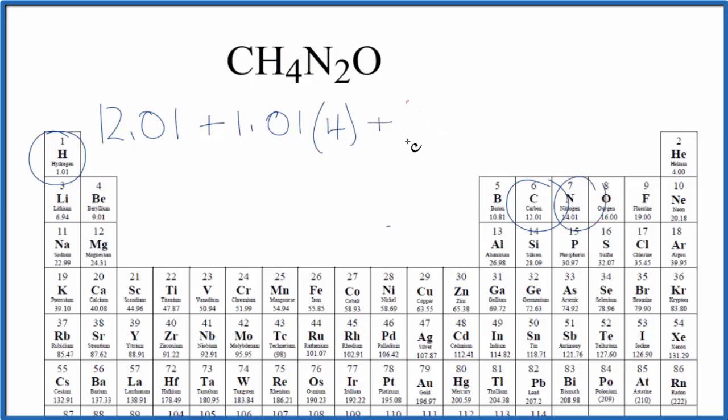14.01 grams per mole, two nitrogen atoms, plus oxygen which is 16.00, and the units are grams per mole.